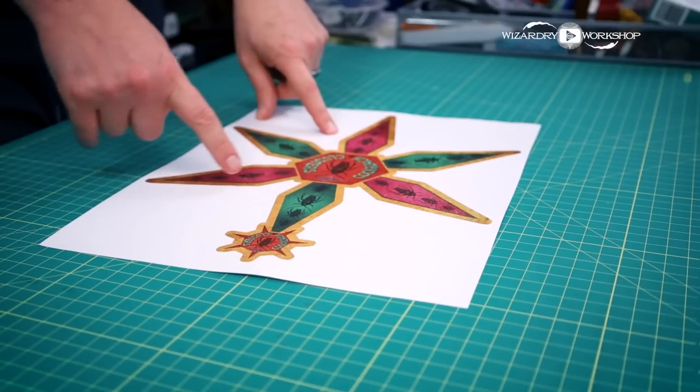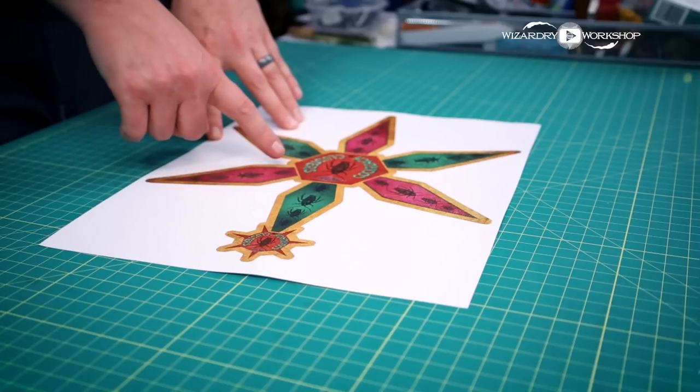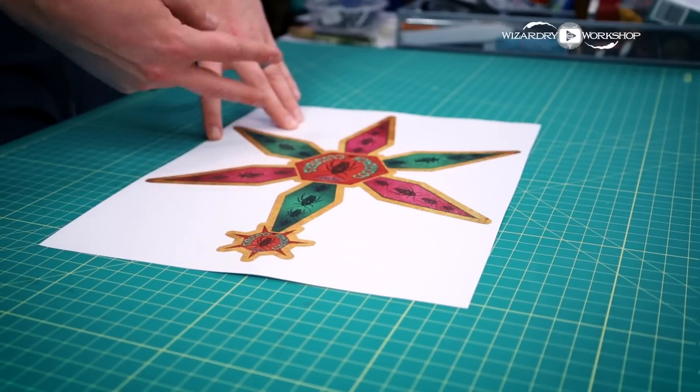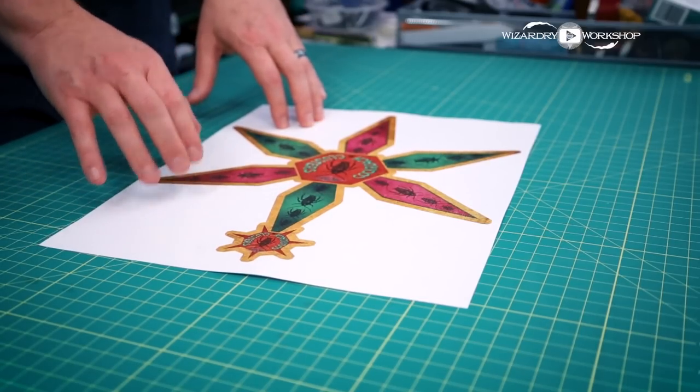Next thing, we cut this out. Like I said, if you did the template that doesn't use a Cricut, then you just cut it out with scissors. But I'm going to use a Cricut to do this.